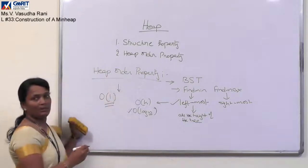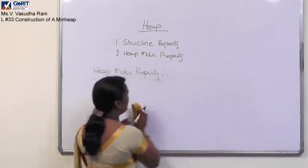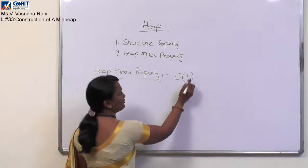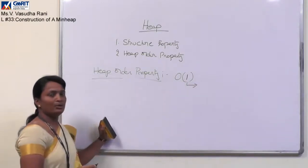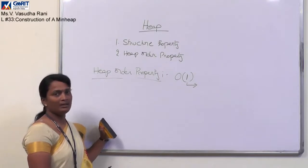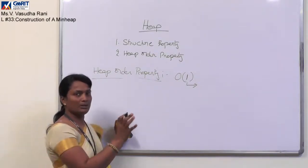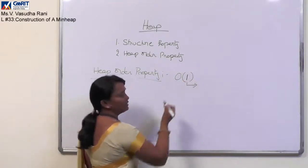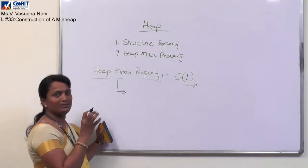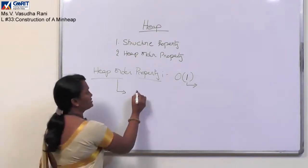By applying the heap order property, we want to reduce the time complexity for find min and find max to O(1). How is this possible? If we want to get the minimum value in O(1), it is simply clear that the node with the minimum key value should be at the root node, or the maximum key value should be at the root level. Then we can achieve time complexity of 1. So it is possible by defining the heap order property to place the minimum value at the root level — that is your min heap.